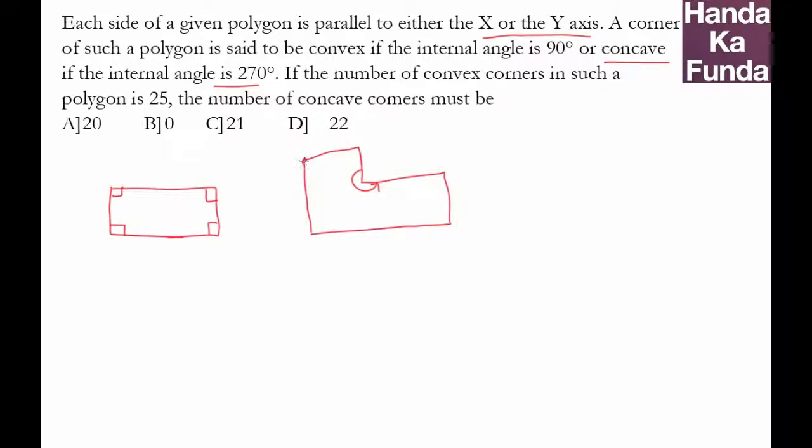So this has one concave angle which is 270 degrees. The others which is one, two, three, four and five. So this has one concave and five convex. Whereas this has zero concave and four convex. Let's try some more.